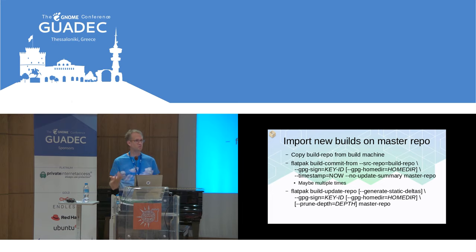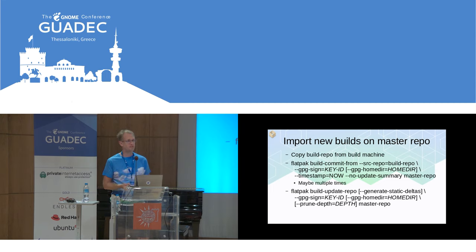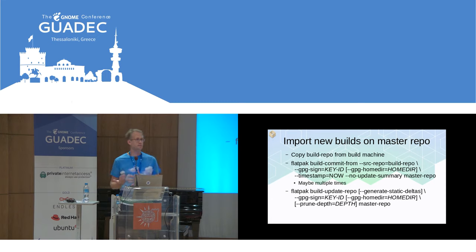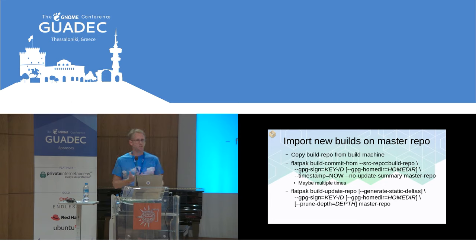Typically when you pull something into a repository you use 'ostree pull', but that's not quite what we want here. The new commit won't have the correct history — probably won't have any parent at all, and even if it does it's not necessarily the previous one in the master repository. So we have this 'ostree commit-from' operation that reconstructs a new commit object based on a previous one, changing some things including the parent. It's really important to get the parent right because then you can get deltas working correctly.